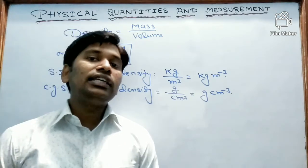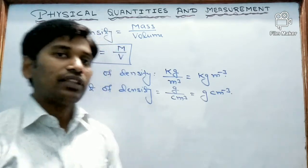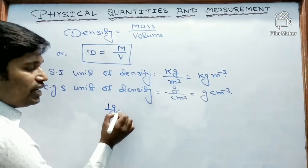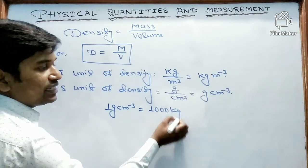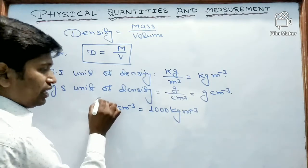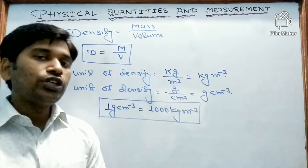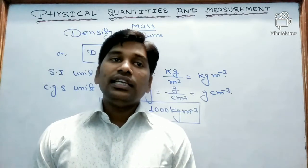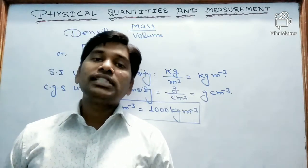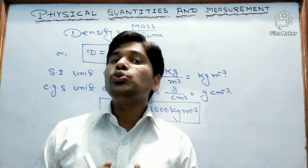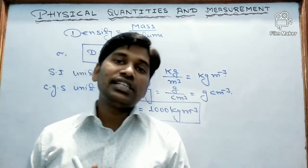Now let us see the relationship between SI and CGS unit of density. 1 gram per centimeter cube equals 1000 kg per meter cube. The density of a pure substance varies a little from sample to sample due to two factors: the first one is temperature and the second one is pressure.